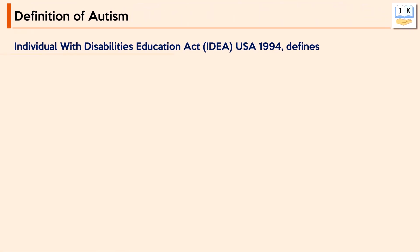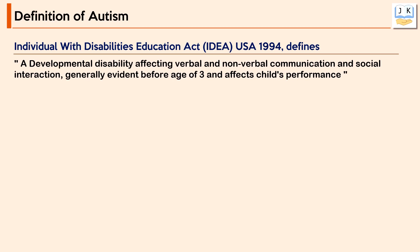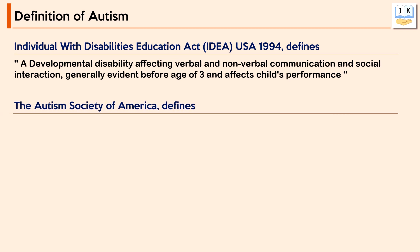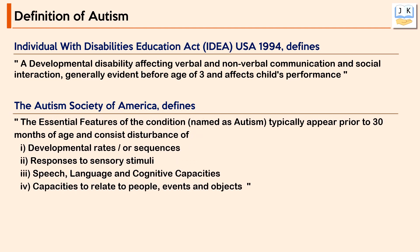According to the Individuals with Disabilities Education Act (IDEA), autism is defined as a developmental disability affecting verbal and nonverbal communication and social interaction, generally evident before age three, that affects the child's performance. The Autism Society of America defines autism as a condition whose essential features typically appear prior to 30 months of age and consist of disturbances of developmental rates and/or sequences, responses to sensory stimuli, speech, language, cognitive capacities, and capacity to relate to people, events, and objects.